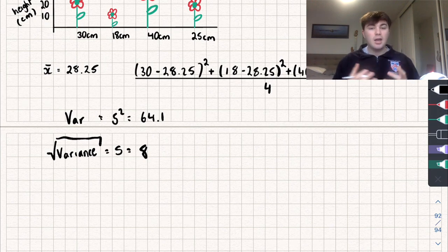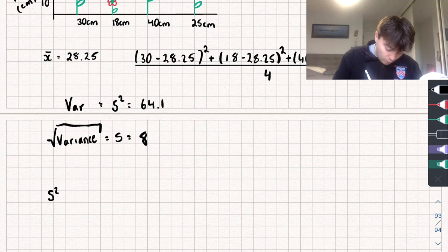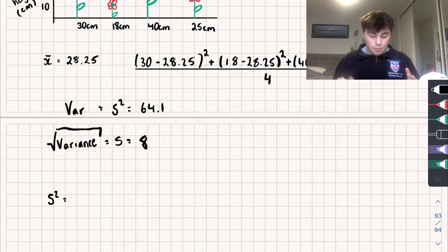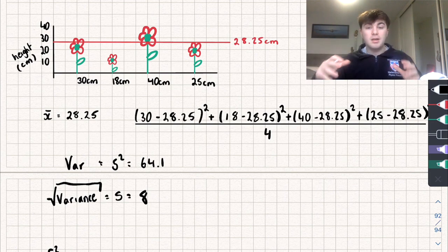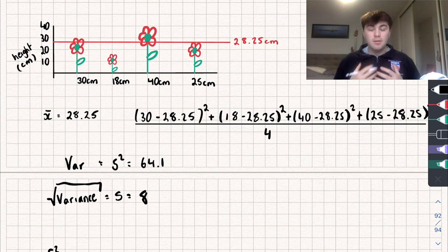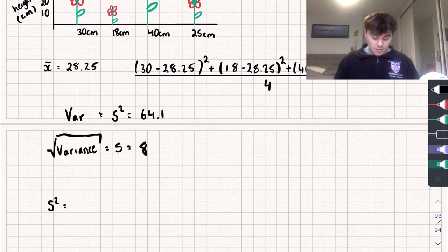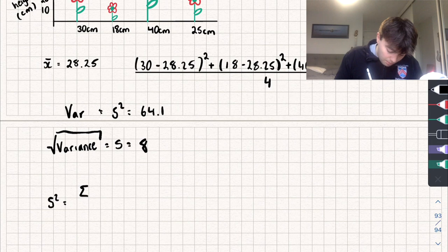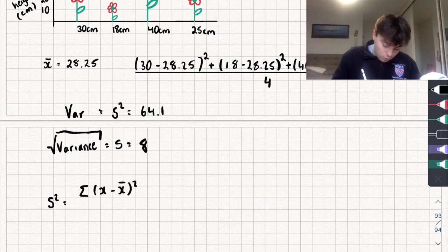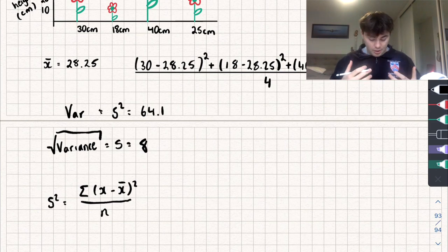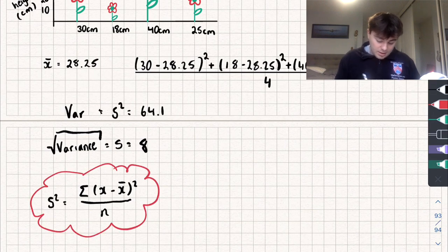Now let's take a look at some formulas we can use to calculate these values. Starting with variance — s-squared — let's think about what we did: we took the sum of each data value subtract the mean, squared it, and then divided by how many data values we had. If we write that out, it's the sum of (x minus x-bar) all squared, divided by n. This here is our formula for the variance.